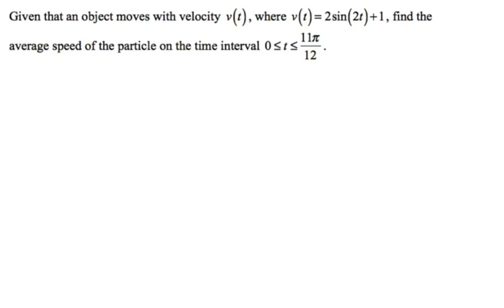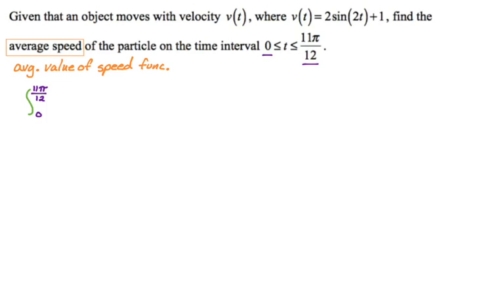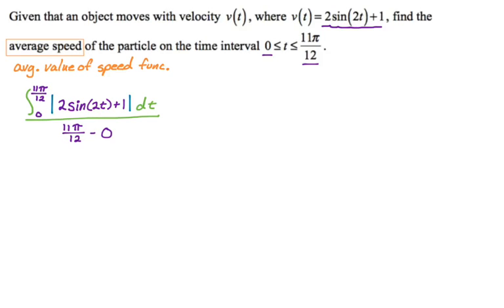I'll warn you ahead of time, some of the calculations in here are not super fun. Average speed — when you see 'average blank,' replace that in your mind with 'average value of the speed function.' So I know that average value is integral over interval. I'm going to have the integral with bounds 0 to 11π/12, of the absolute value of v(t), which is the absolute value of 2sin(2t) + 1, dt. Then divide by the interval length: 11π/12 minus 0.